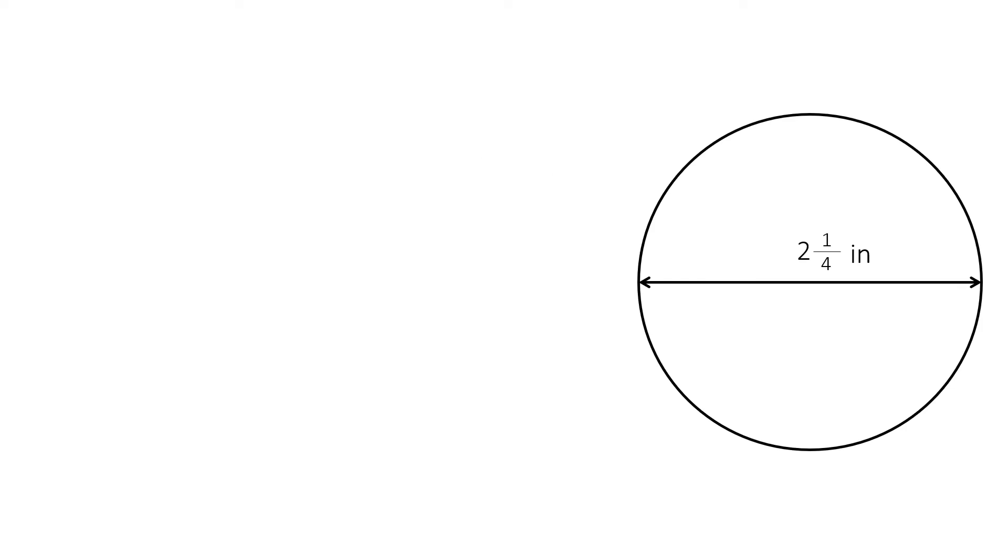Well, we know that the formula for circumference is pi d, otherwise known as pi times diameter. We know that pi equals 3.14.